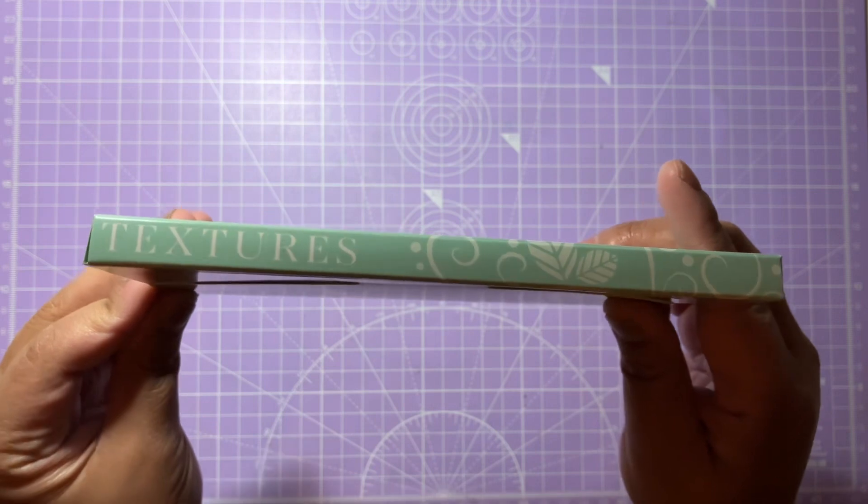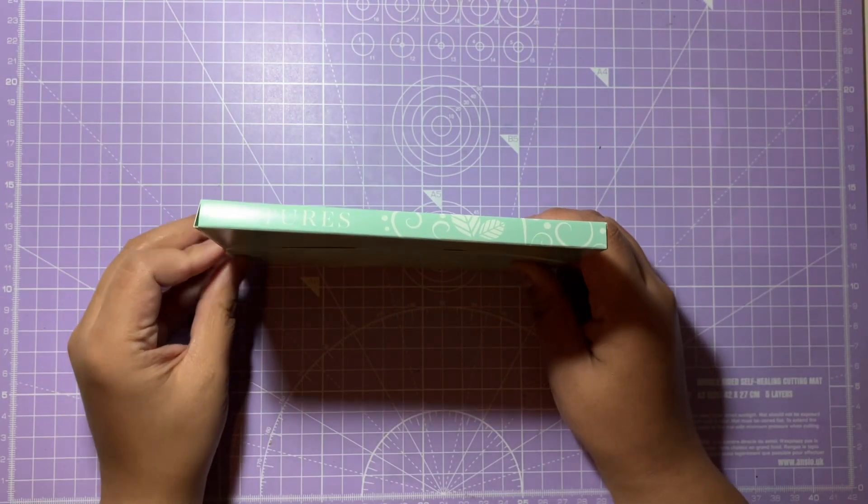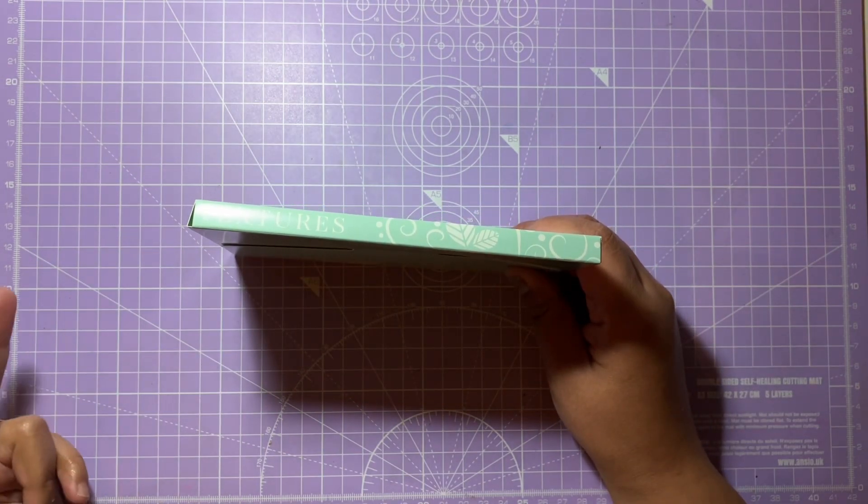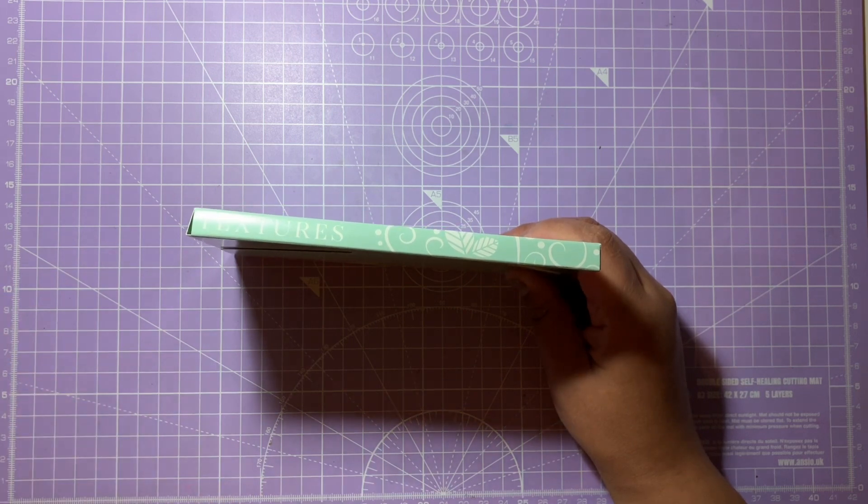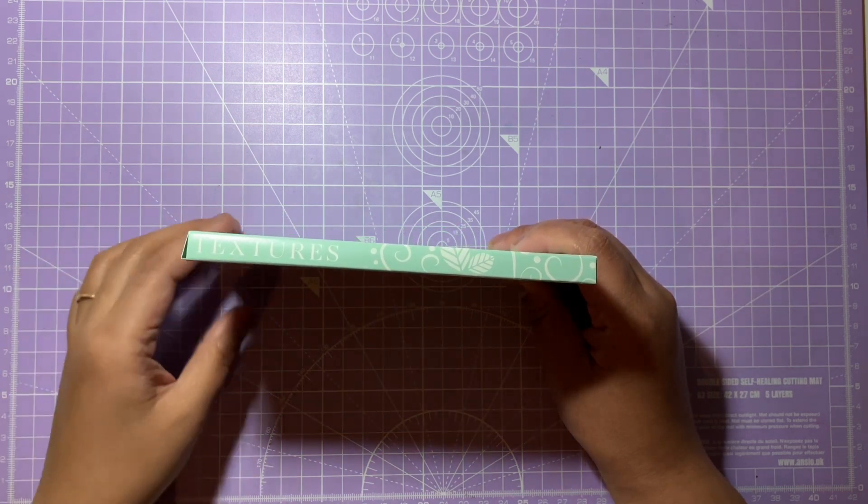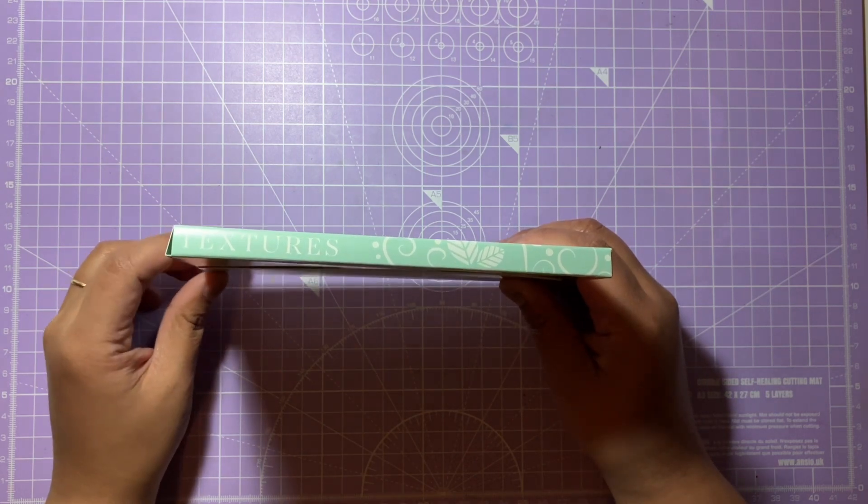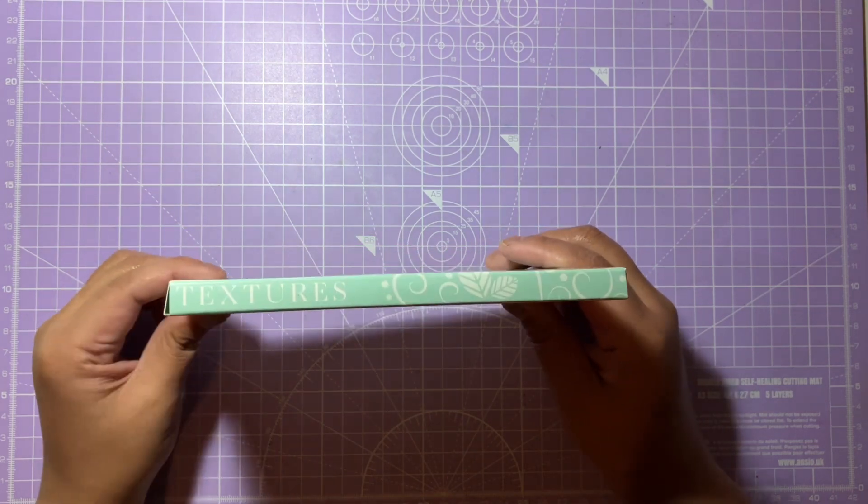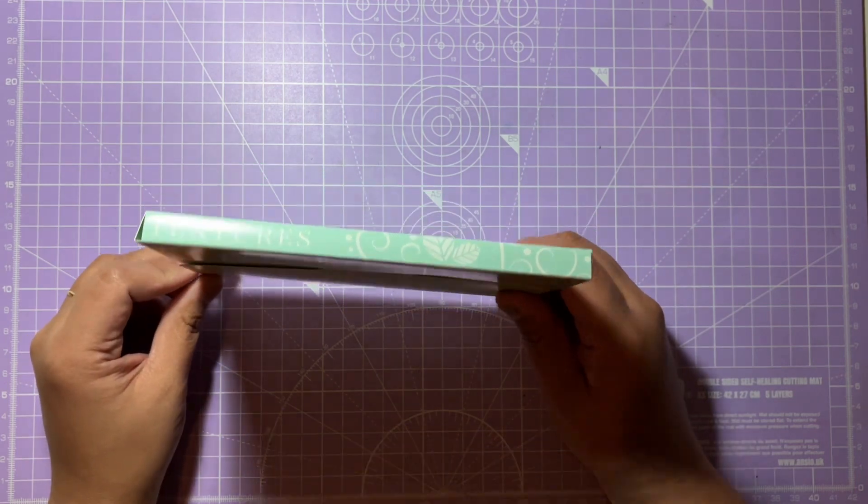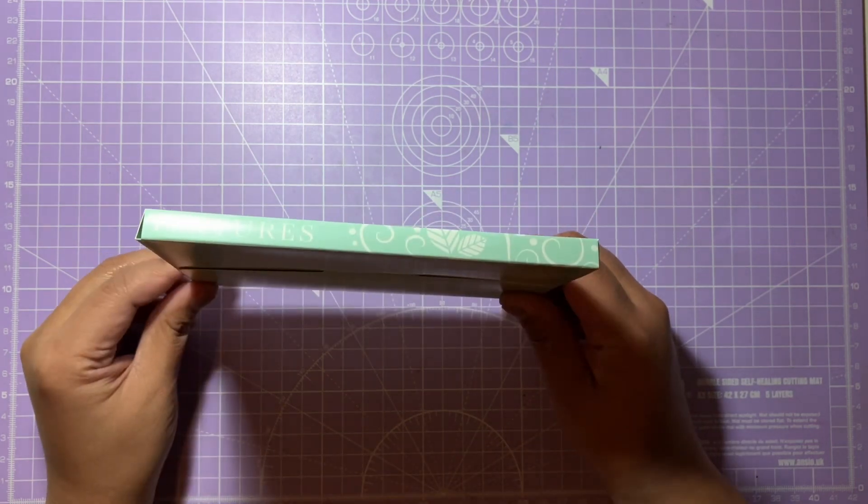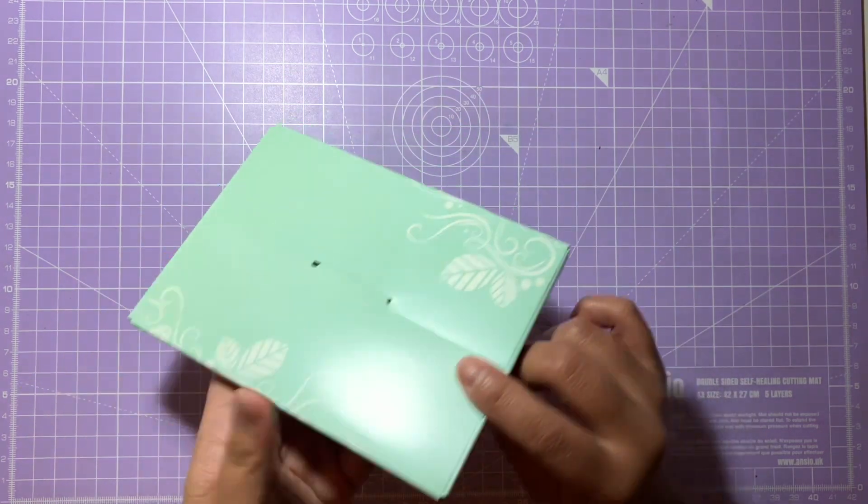Some of the envelopes will have die cuts, dies, stamps, or labels for example, so you don't really know what's going to be in the envelopes until we reveal them. I'm really excited about revealing what the envelopes contain.